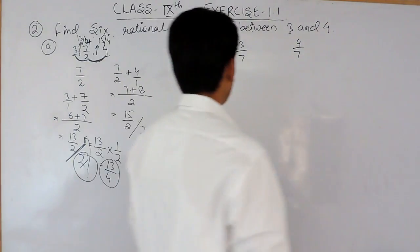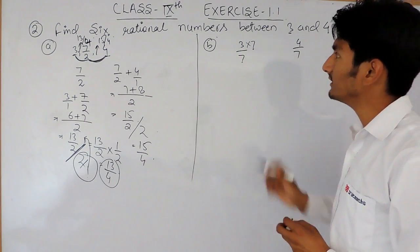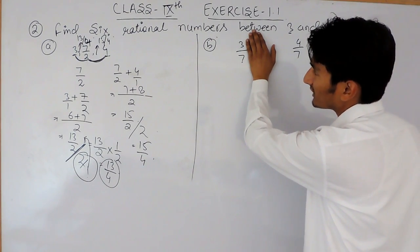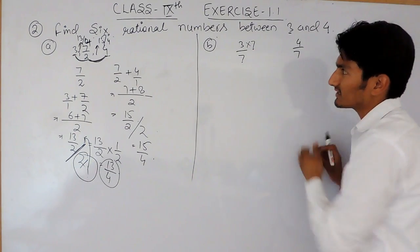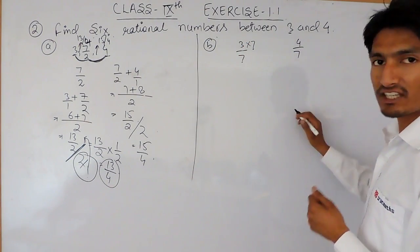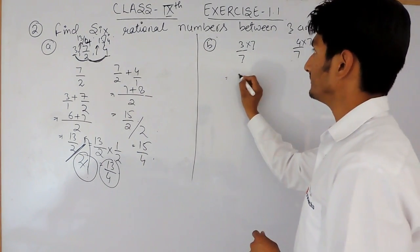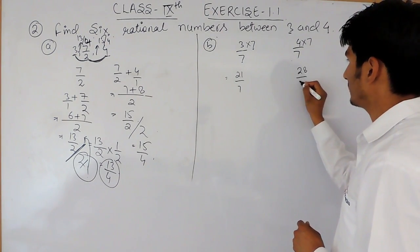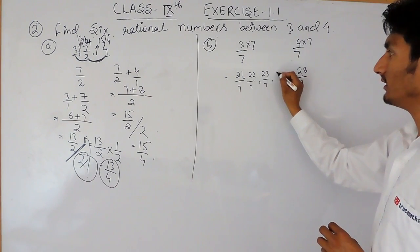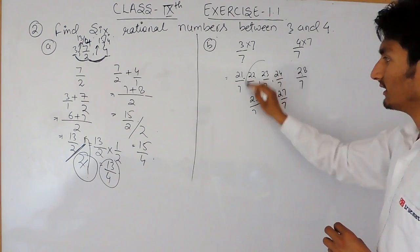Since you are dividing by 7, you also multiply both 3 and 4 by 7. If you don't multiply, the expression would become 3 upon 7, which changes the value. By multiplying by 7, the 7s cancel and the numbers remain the same: 3 becomes 21 upon 7 and 4 becomes 28 upon 7. So the numbers between 21/7 and 28/7 — that is 22 upon 7, 23 upon 7, 24 upon 7, 25 upon 7, 26 upon 7, and 27 upon 7.